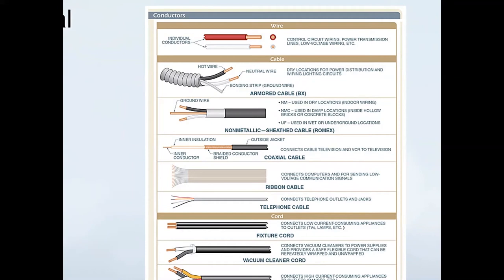We have armored cable, which has an aluminum jacket around the outside, which is flexible. This is used for dry locations and power distribution and wiring lighting circuits, where we want to protect the cable from damage.